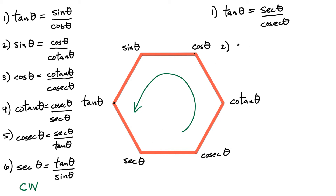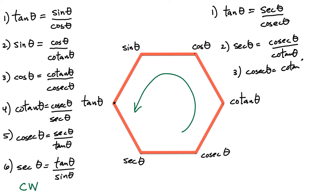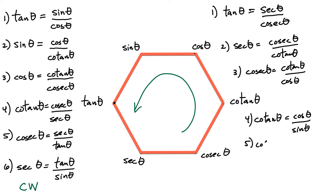Number two: secant of the angle theta must be equal to cosecant divided by cotangent. Number three: cosecant equals cotangent divided by cos. Number four: cotangent equals cos over sine. Number five: cos equals sine over tangent.